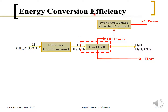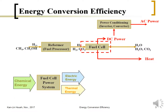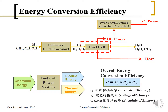For the fuel cell, since we are most interested in the electricity, we talk about how much chemical energy is converted into DC power. So in this case we are most interested in the ratio between the electricity and the chemical energy. This overall efficiency can be subdivided into the intrinsic efficiency, voltage efficiency, and faradaic efficiency, which we will discuss in the next slide.